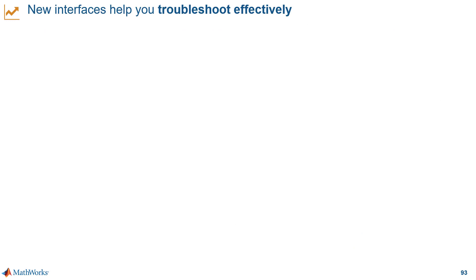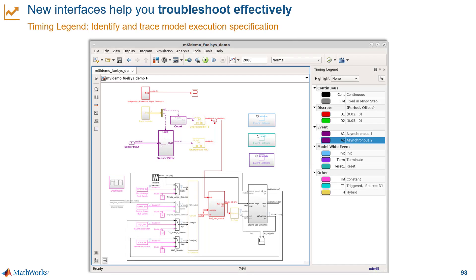Another effective tool for debugging and troubleshooting is the new timing legend, which is the new version of what we used to call the sample time legend. This interface update makes it easier to see and understand where the different sample times originate in your model, so you have the ability to focus on just the blocks that introduce a specific sample time.